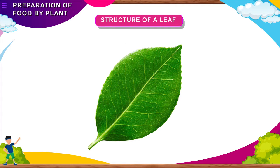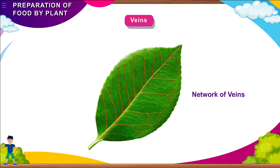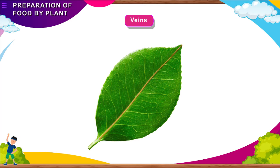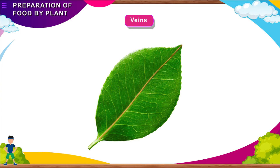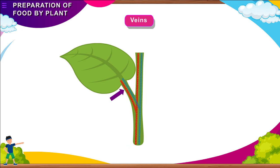Structure of a Leaf: Veins. Look at a leaf against light. You will see a network of veins. These veins are tubular and carry water to all parts of the leaf. The leaf has a thick main vein in the middle, which gives off very thin side veins. The main vein is called the MIDRIB. The main vein has two tubes. One tube carries water and minerals from the stem to the leaf, and the other tube carries prepared food from the leaf to the other parts of the plant.